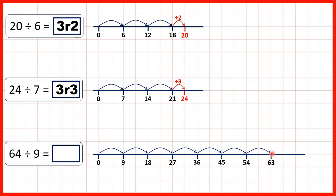So we need to stop at 63. Then from 63, we just need one more — we need to add 1 to get to 64. So our answer is 7 remainder 1. That's because we made 7 jumps of 9, but that only took us to 63, and from that we needed one more to get to our dividend, to get to 64. So that's why our remainder is 1.